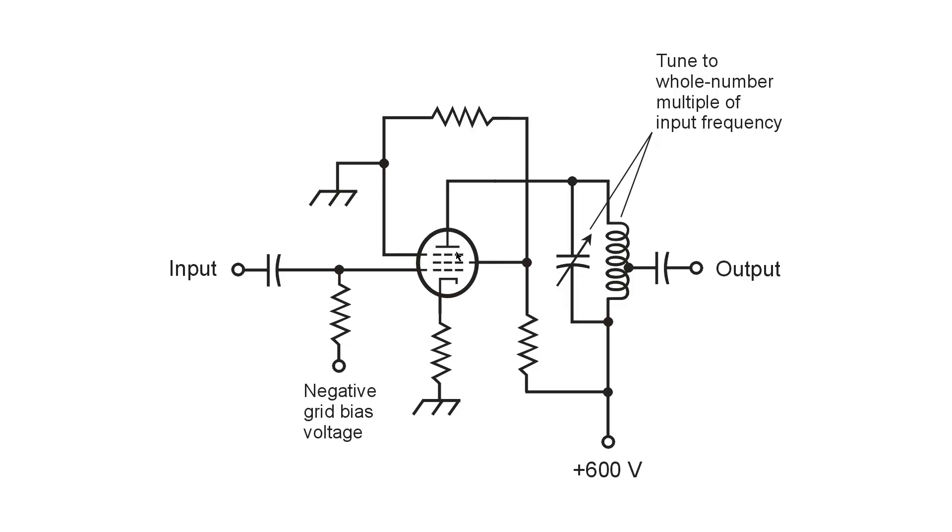The suppressor grid of the vacuum tube is normally at ground potential. That's 0 volts DC. It's directly connected to ground in most situations.